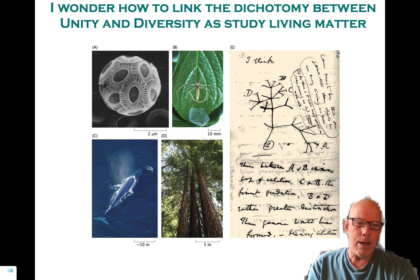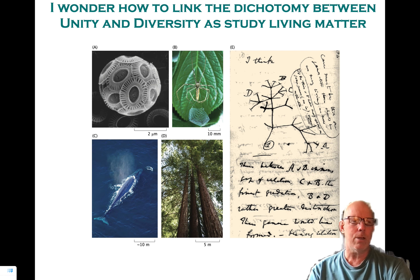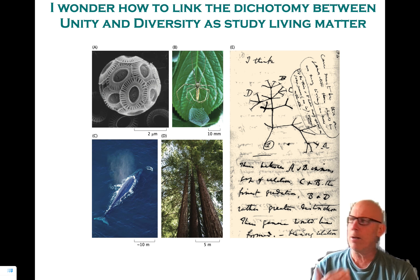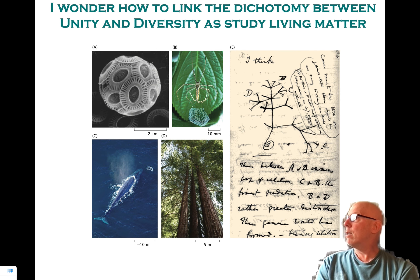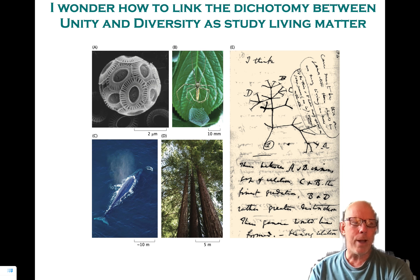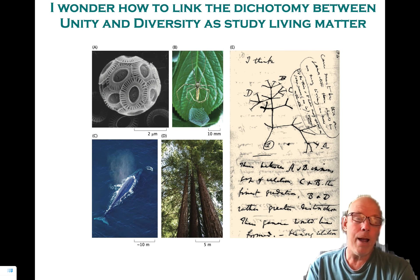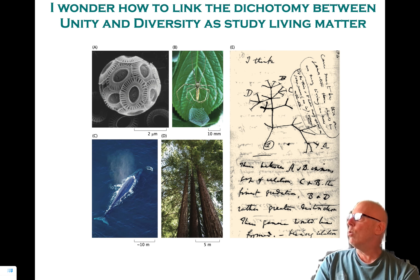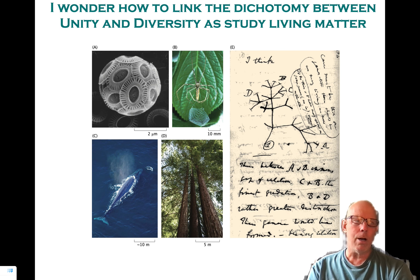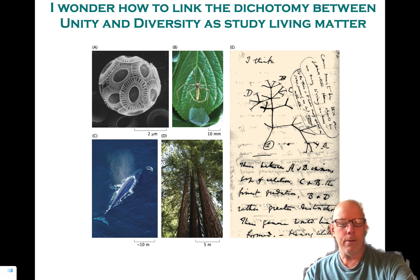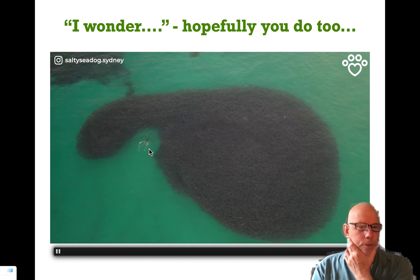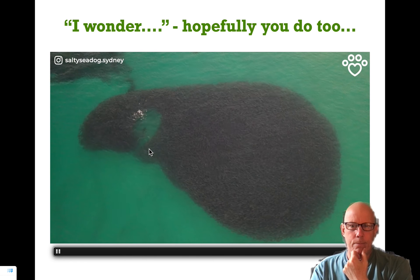What I wonder is how to link the dichotomy between unity and diversity as we study living matter. The diversity of the living world — whether it's the blue whale or the giant redwood sequoias — with the general principles such as the unity of biochemistry in the form of the genetic code, glycolysis, the use of ATP, overarching principles such as error correction. How do we think about the linkage between those things and how will that alter, on the 50-year timescale, the teaching of the life sciences? I look forward to a day when we will no longer think of biology as a subject where, for a whole undergrad education, we can largely ignore all the great insights of mathematics from the last 400 years. So, to close this vignette: I wonder — and hopefully you do, too.